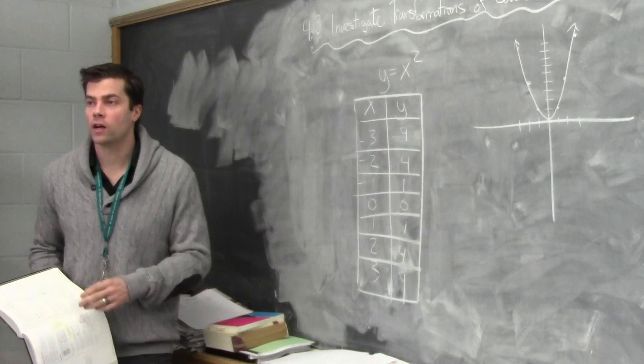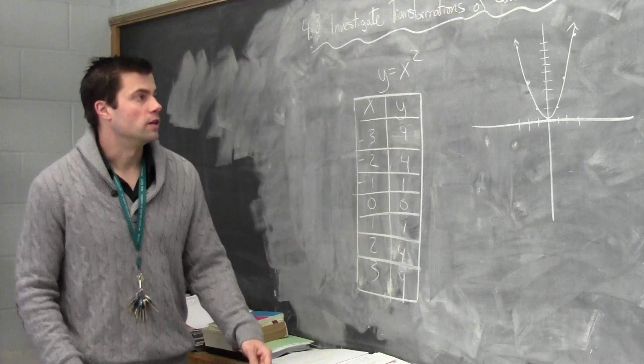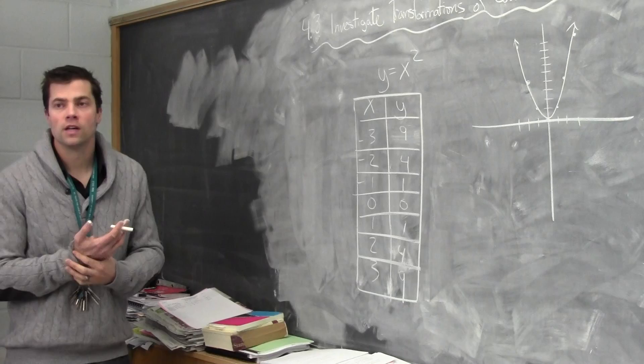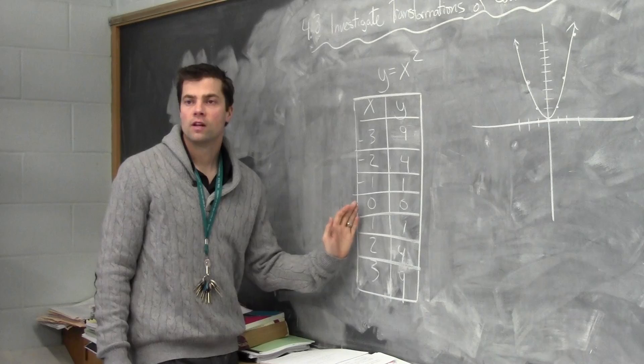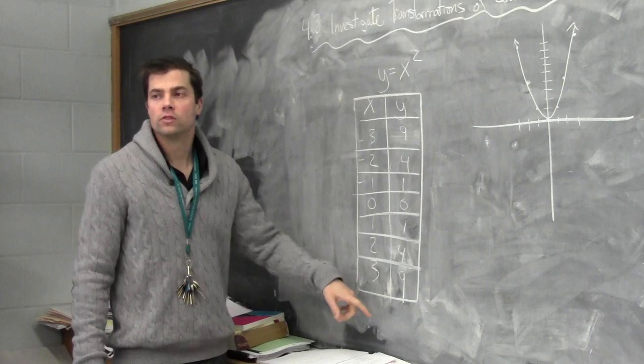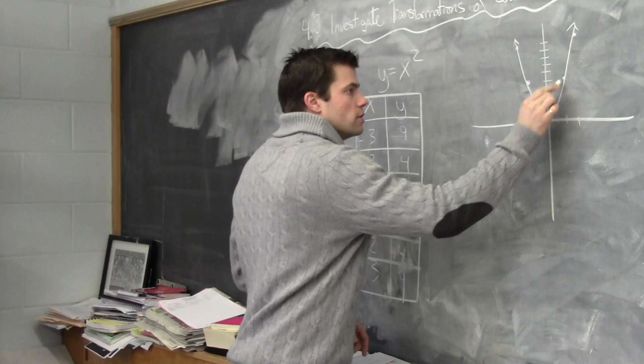This is section 4.3. We're investigating transformations of quadratics. So far, the only quadratic you've really learned is y equals x squared. The method you've learned to graph this is to make a table of values — you put chosen x values on the left, then substitute those x values into your equation to find your y values. That gives you a scatter plot.